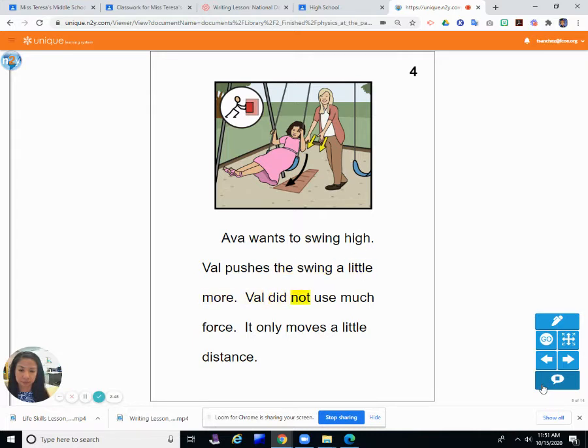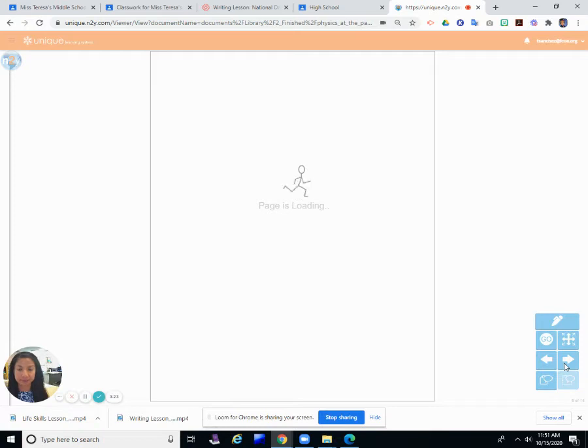Ava wants to swing high. Val pushes the swing a little more. Val did not use much force. It only moves a little more. So if you've been on the swings, you know, and some of you know how to actually make yourself go really high on the swings. She wanted to go higher, but Val did not use much force. She pushed the swing just a little bit forward. So that, as you know, probably is not going to get you very high. You need a pretty hard push to go high in the air. So it only moved a little distance.